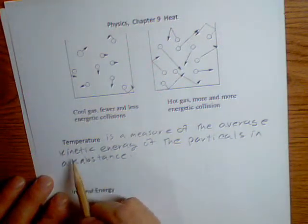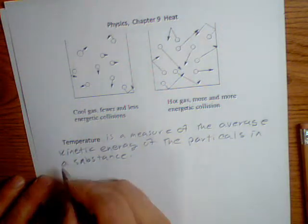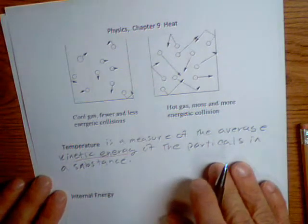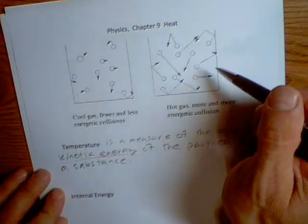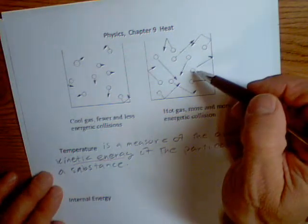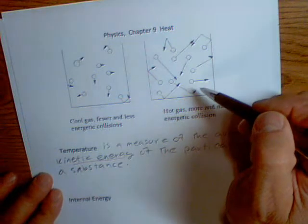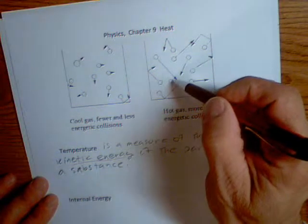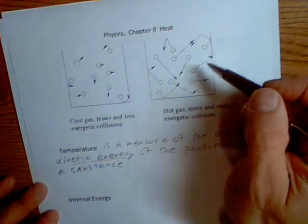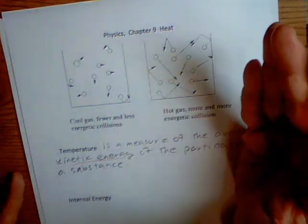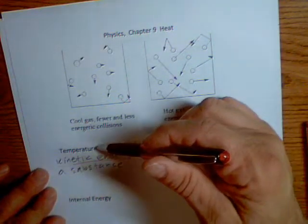Kinetic energy, what you'll recall, is the energy of motion. So temperature is our attempt to measure the rate at which these particles are bouncing around. When they bounce around, they hit each other, creating some friction. And it hits the wall, and it creates friction. And that is what we're measuring when we're measuring temperature.